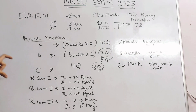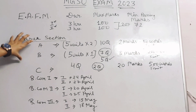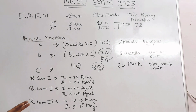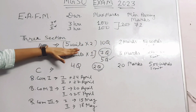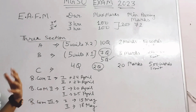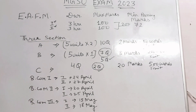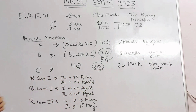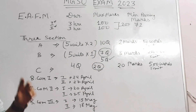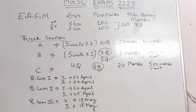Now let's talk about the paper pattern. The paper comes in 3 sections: A, B, and C. Section A is very short questions — there will be 10 questions, 2 questions from each unit. The word limit is 50 words. To prepare Section A, the easiest way is to learn the names and definitions of chapters — for example, in the international trade chapter, what is international trade, what is demand, and all such definitions.